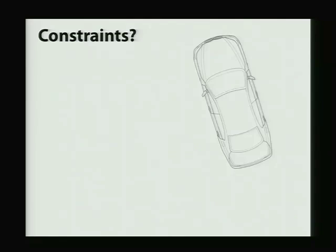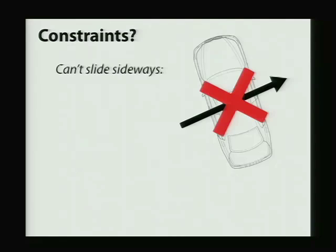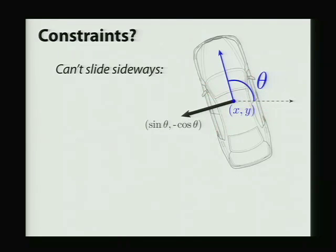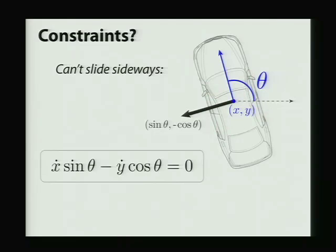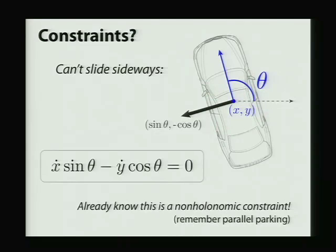Of course, this isn't the end of the story. To describe our vehicle, we also need to give the constraints. So for instance, in this sideways sliding constraint, we can derive this by just saying we're going to dot the linear velocity vector with the sideways direction and set that equal to zero. And we already know that this is a non-holonomic constraint just by observing the behavior of the car during parallel parking. Again, we know that we can't express this constraint purely in terms of position. But now the question is, how do we actually encode these constraints numerically so that we can use them in our integrator?